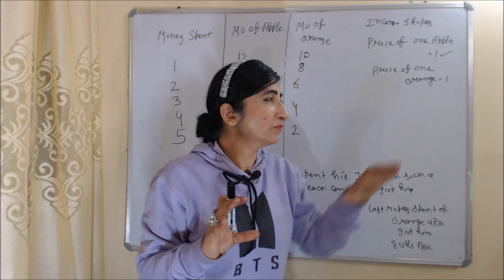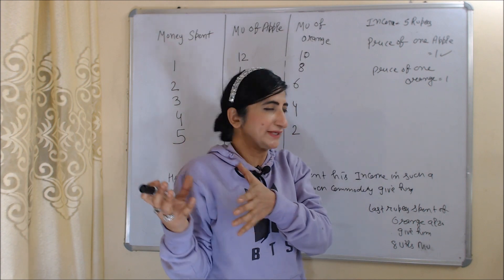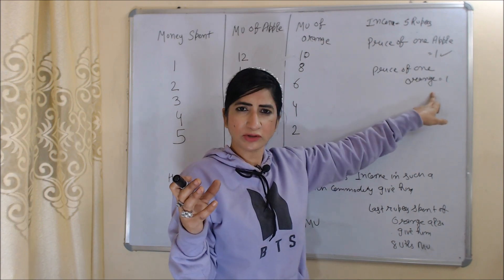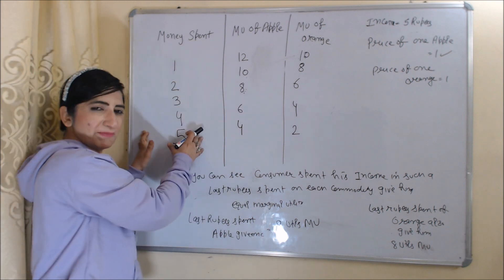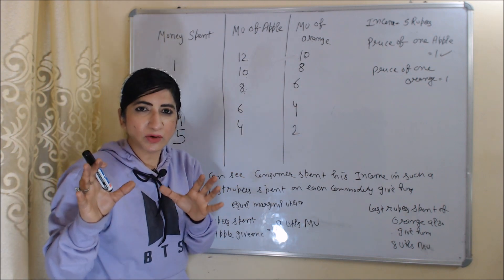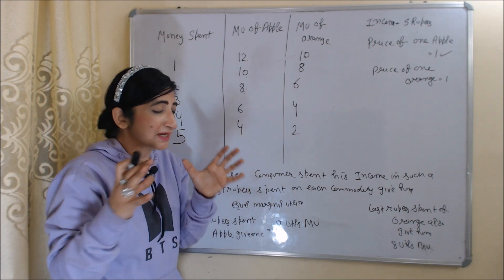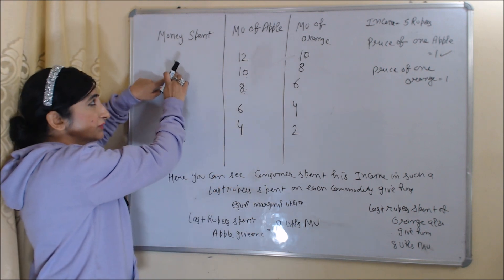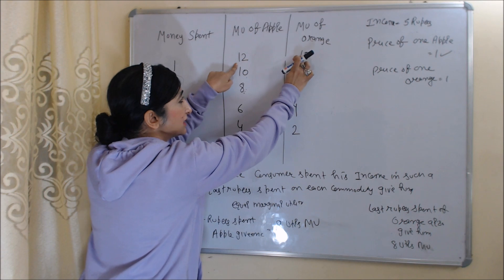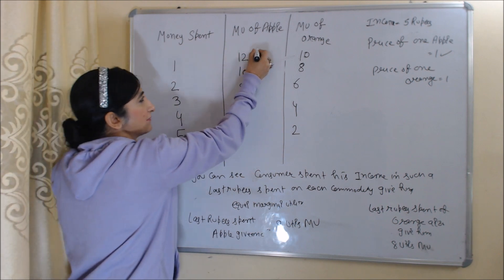In this table, we assume the consumer's income is limited — he has only 5 rupees to spend, and two commodities: apple and orange. The price of one apple is 1 rupee and price of one orange is also 1 rupee. In the first column we have money spent, second column marginal utility of apple, third column marginal utility of orange. The consumer's goal is to spend income so that each commodity gives maximum marginal utility. So initially he spends 1 rupee on buying apple because apple gives him 12 utils of marginal utility, which is more than 10 utils from oranges.